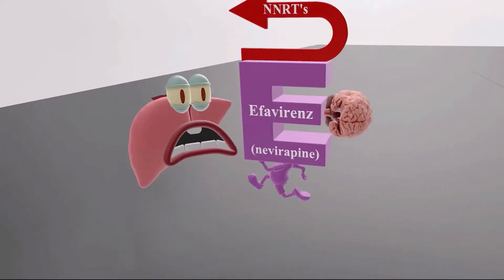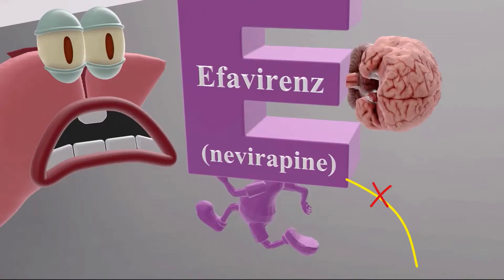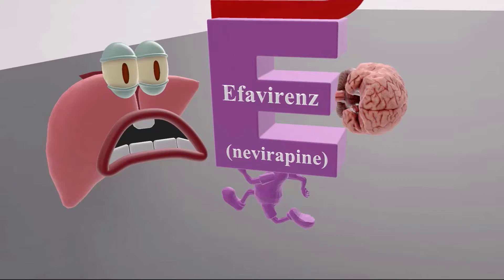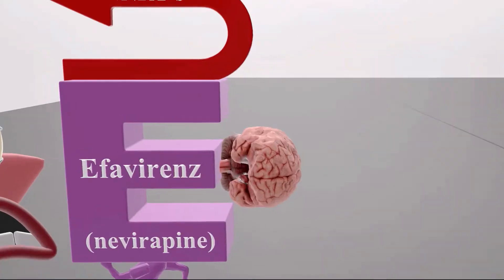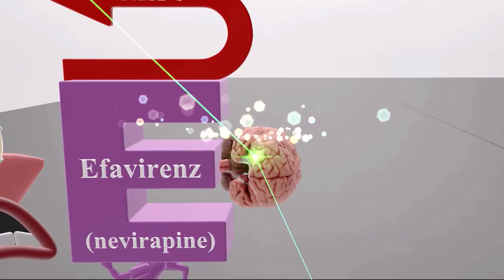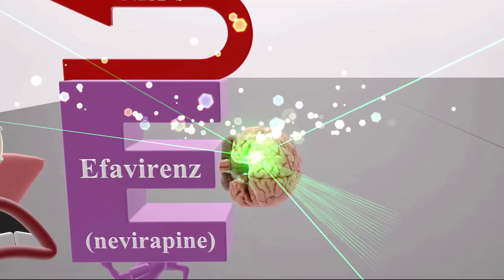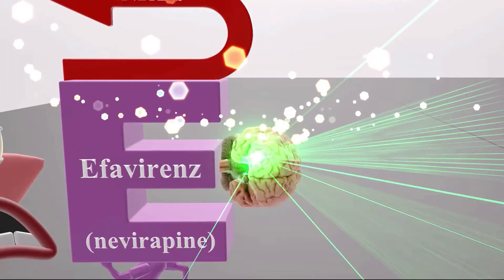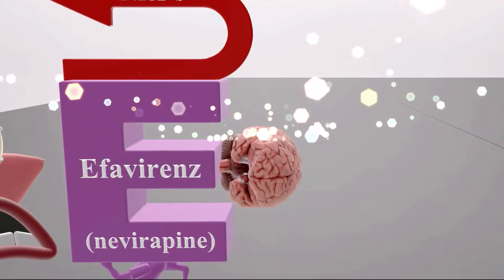Finally, we get to the NNRTIs, represented by the letter E running away — 'E that's running' for efavirenz. He never pees, which reminds us of nevirapine — 'never pees' for nevirapine. He's running towards a liver about to get squashed, reminding us of the hepatotoxicity these drugs can cause. Out of the NNRTIs, there is a brain causing weird side effects, reminding us of the CNS symptoms — such as vivid dreams — that efavirenz can cause.